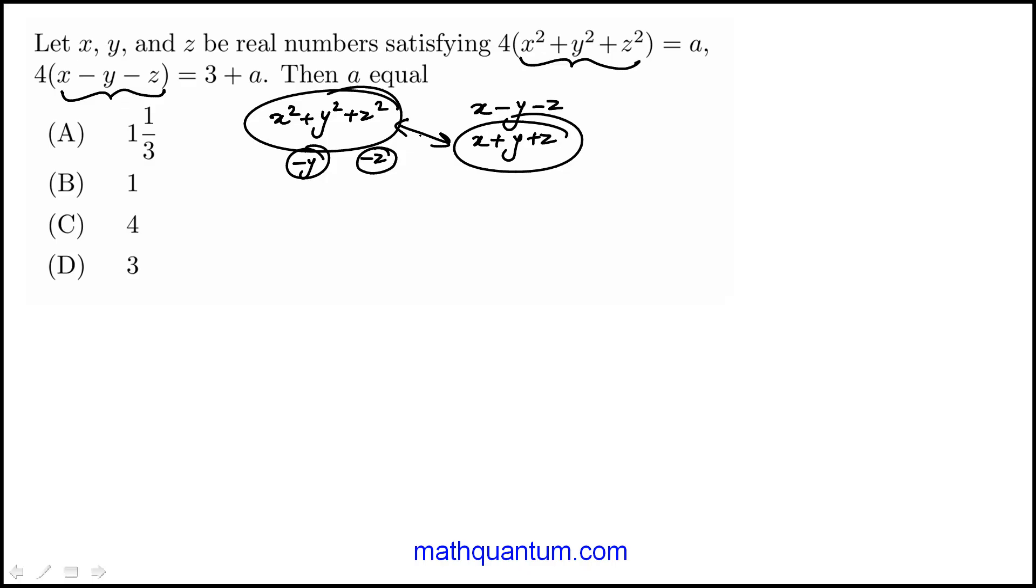So where have we seen these pieces? Well, if we look at this square, we know that we'll get x squared plus y squared plus z squared, and then 2xy, 2yz, 2zx. So that's one relationship we know.